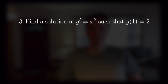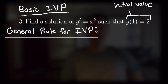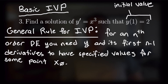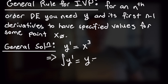Let's move on to number 3: find a solution of y prime equals x cubed such that y of 1 equals 2. This is a good example of a basic initial value problem, where we have a differential equation and an initial value used to solve for the constants produced by solving for y. In general, for an nth order differential equation, you need y and its first n minus 1 derivatives to have specified values at some point x naught. Taking the antiderivative of both sides, y is equal to x to the fourth over 4 plus some constant c.